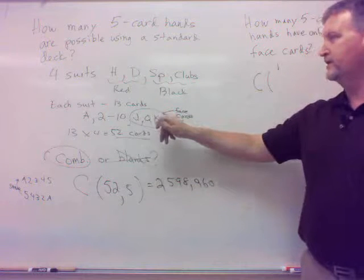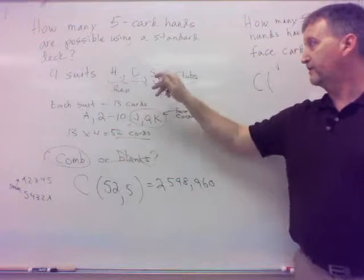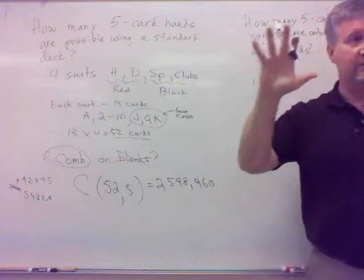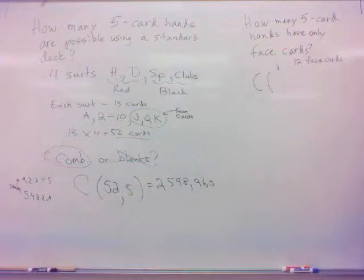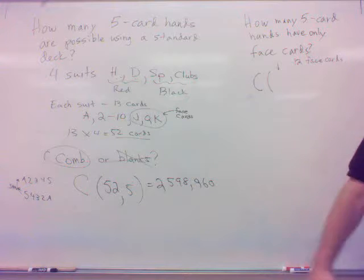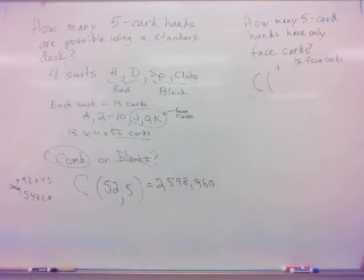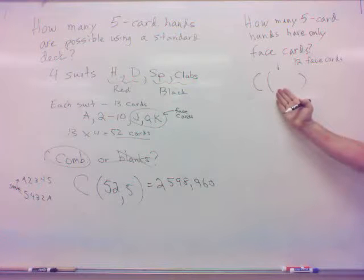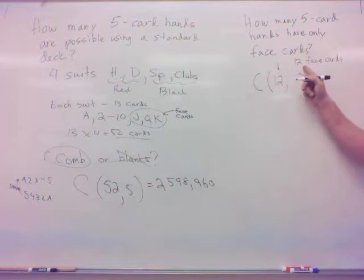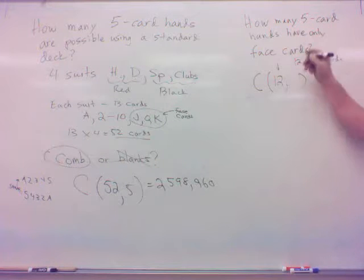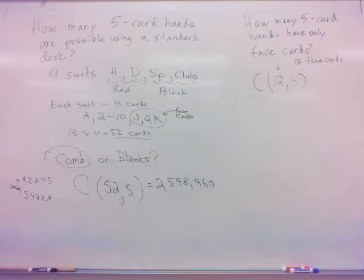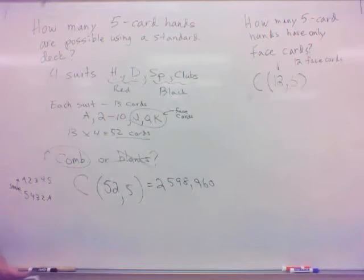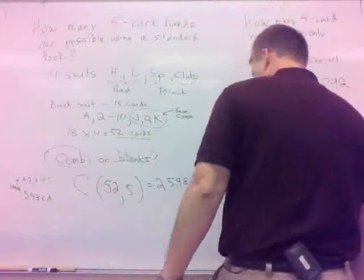Well, there's a jack, queen, and king in each suit. Jack, queen, and king here, here, here, and here. How many does that give you? Twelve face cards, right? All together. The jack, you've got a jack, queen, and king of hearts, a jack, queen, and king of diamonds, a jack, king, and queen of spades, and a jack, king, and queen of clubs. That's 12. All right. So, what's my combinations then? How many are there to choose from? Twelve. I want only face cards, so I'm only going to pick from 12. How many do I want? Five. 12, choose five. Combination 12, five. That's 792. Okay?